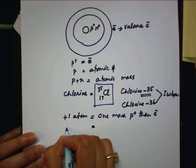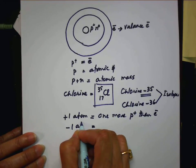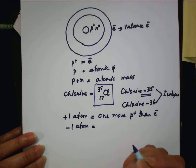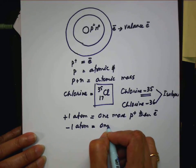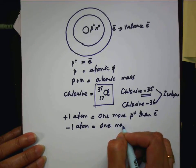So how about negative one atom? If it is negative one, what's happening in that atom? One more electron.